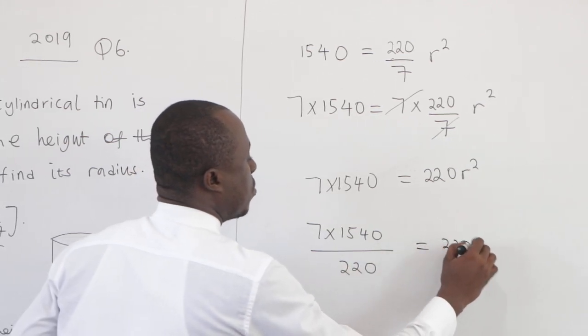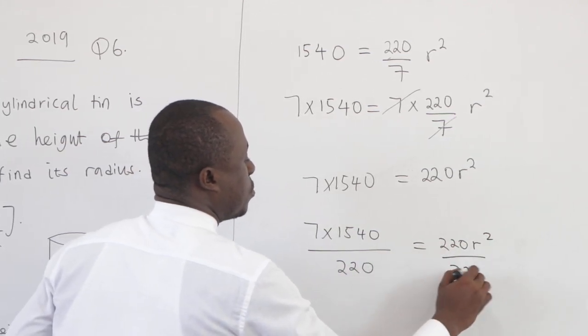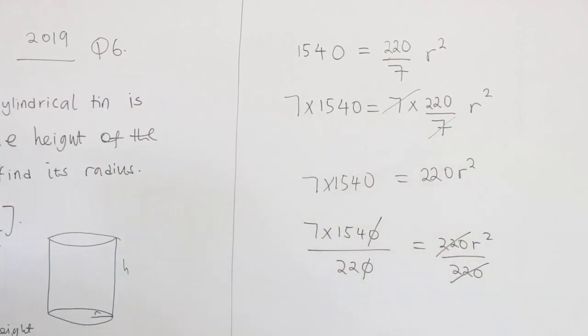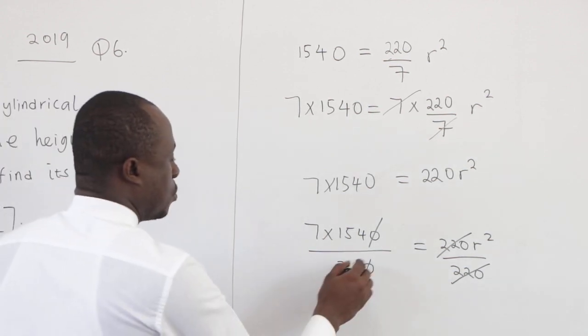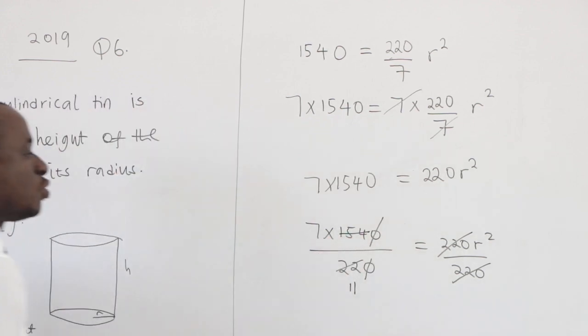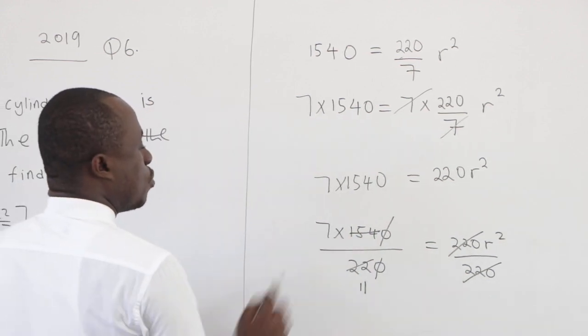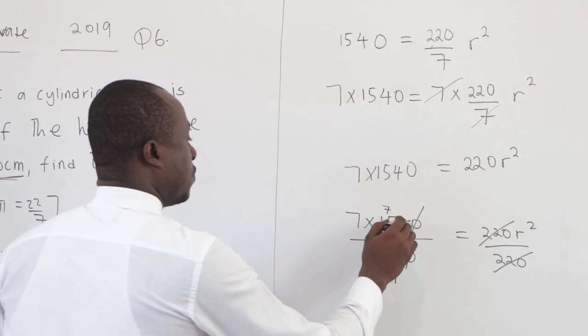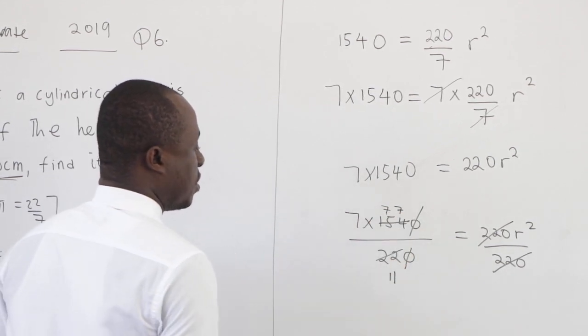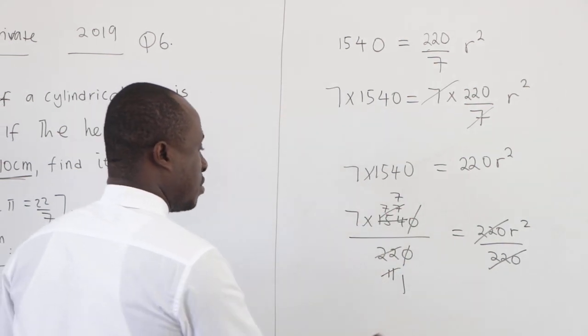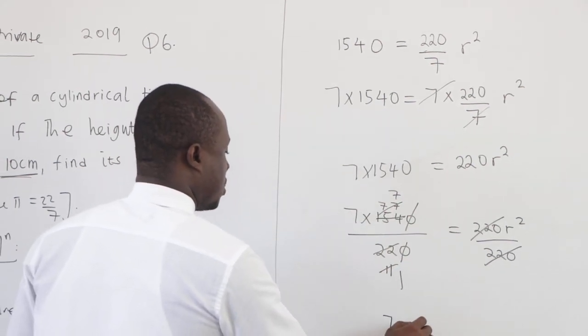Now let's see - this zero is canceling out the zero over there. Now 2 goes into 220 eleven times, 2 going into 154 seventy-seven times. So you have 7×7 equal to r².